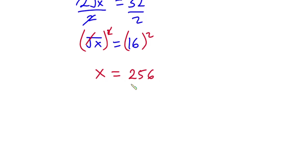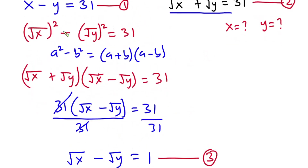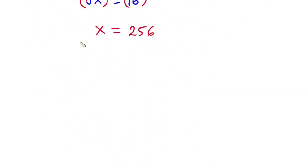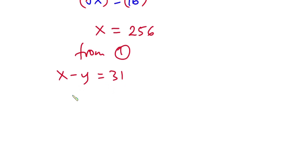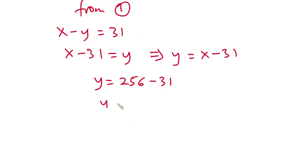Now that we know the value of x, let's substitute this value into equation 1, which is x minus y equals 31. From equation 1 we have x minus y is equal to 31. Making y the subject, we have x minus 31 is equal to y, which implies y is equal to x minus 31. Now that we know x, we have y equal to 256 minus 31.